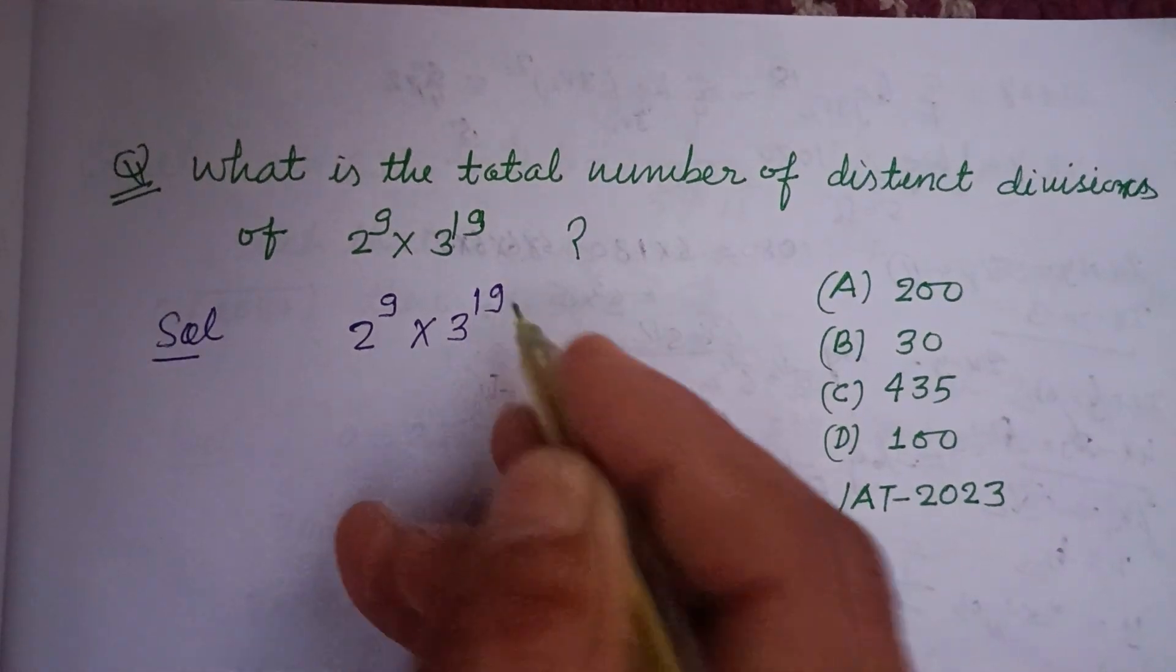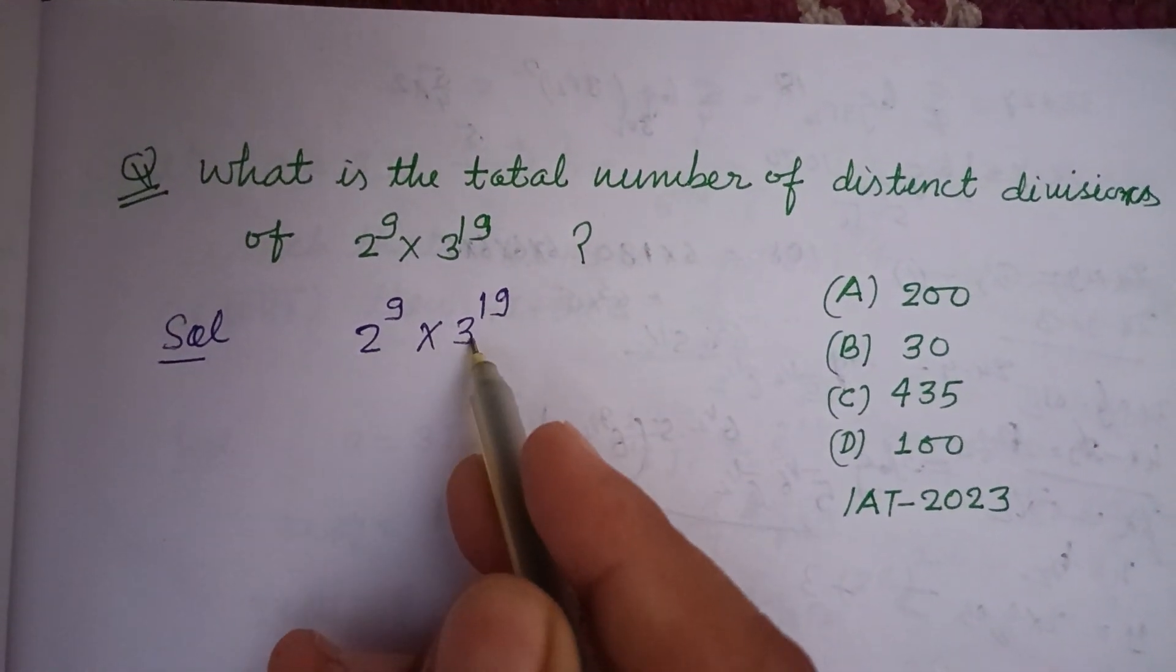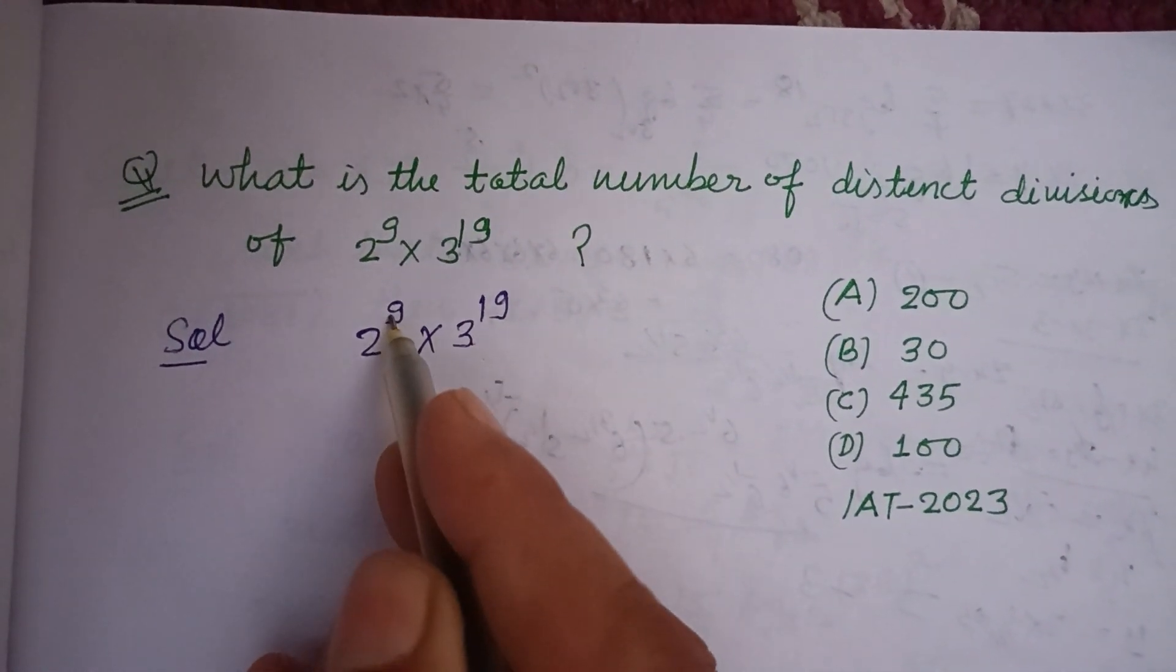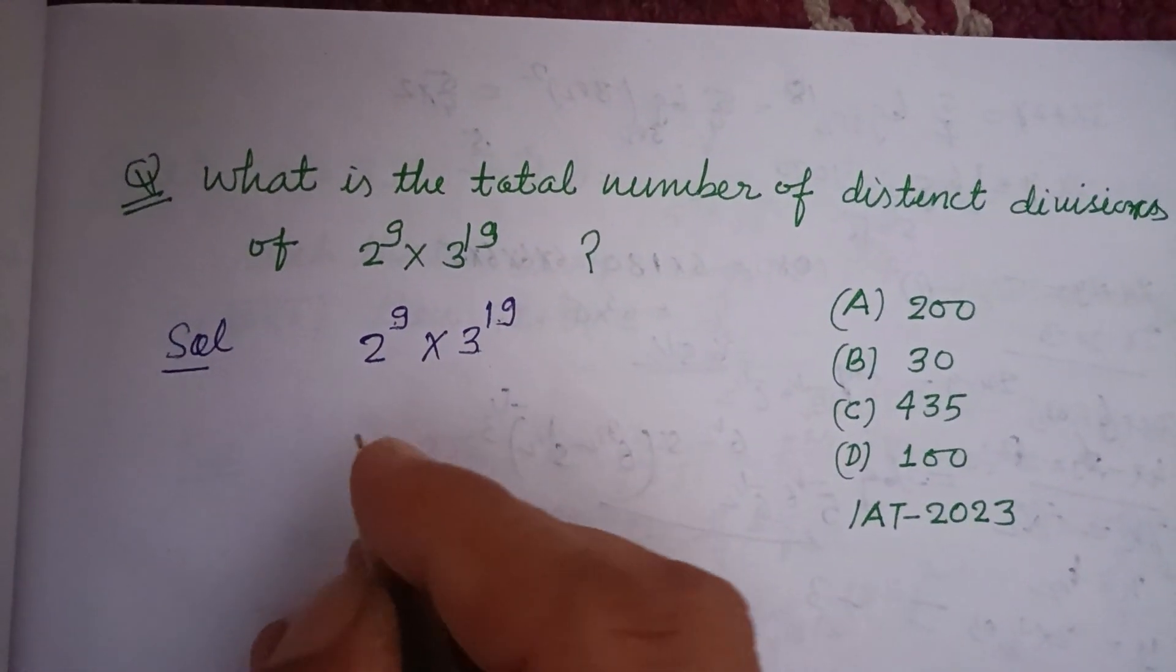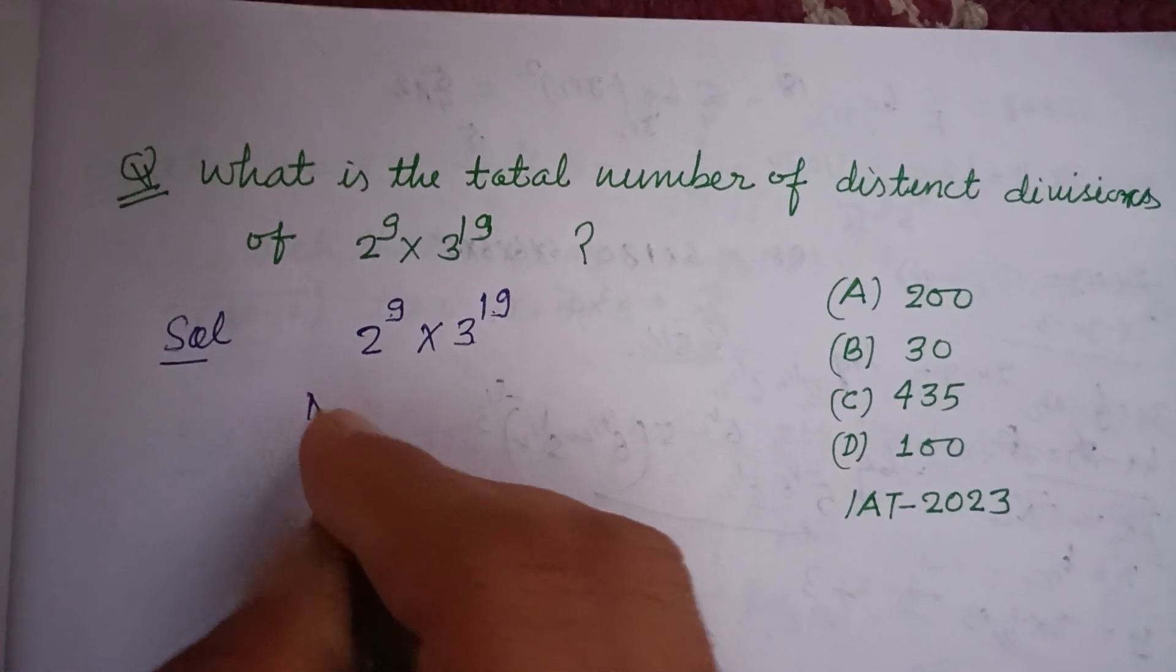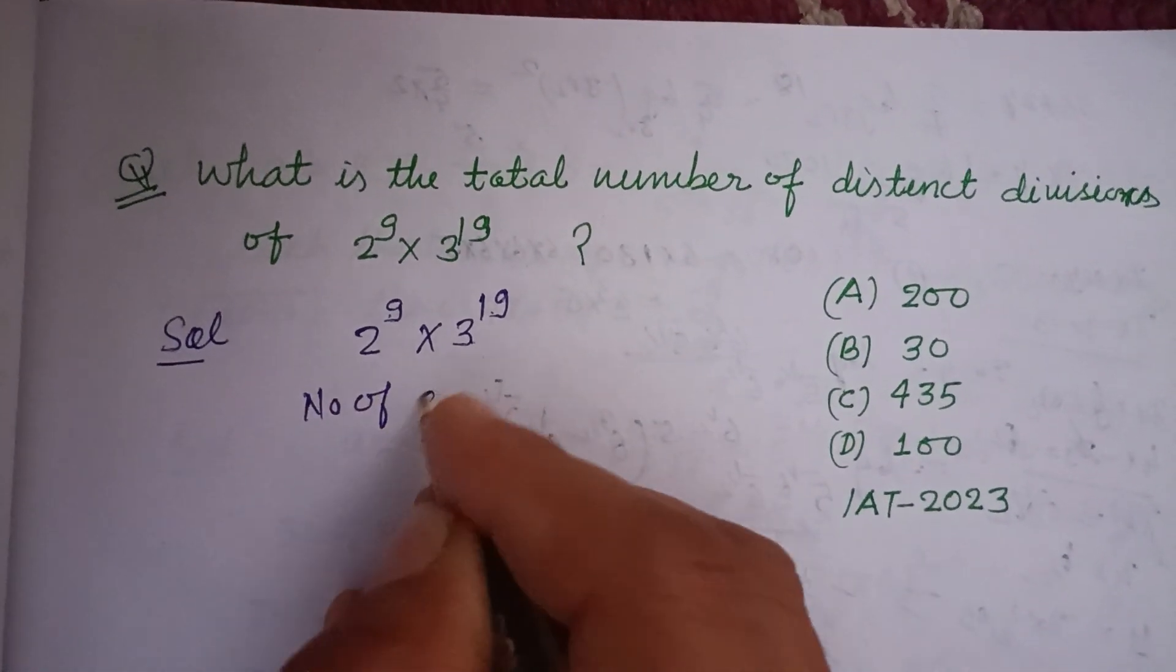and 3 to the power 19 is given. Here 2 and 3 are prime factors whose powers are 9 and 19. So, number of divisors...